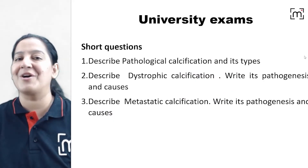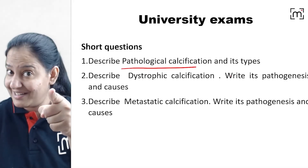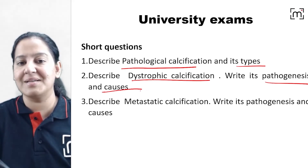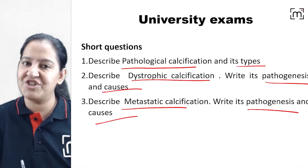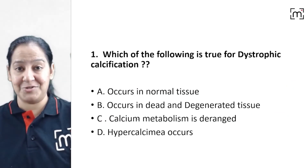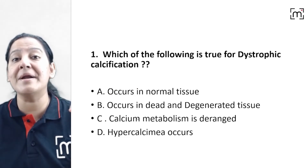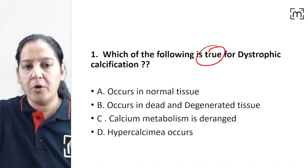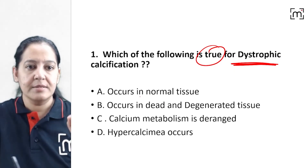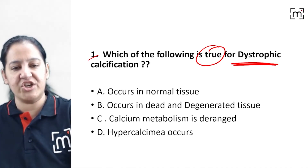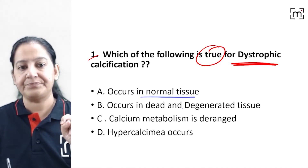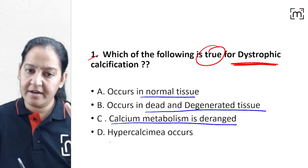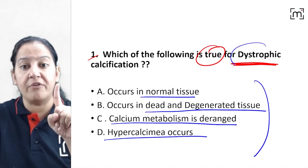Let's revisit the university exam questions. Question number one: What is true about dystrophic calcification? The four options are: A) it occurs in normal tissue, B) it occurs in dead and degenerated tissue, C) calcium metabolism is deranged, D) hypercalcemia occurs. Only one is true for dystrophic calcification — tell me whether A, B, C, or D.